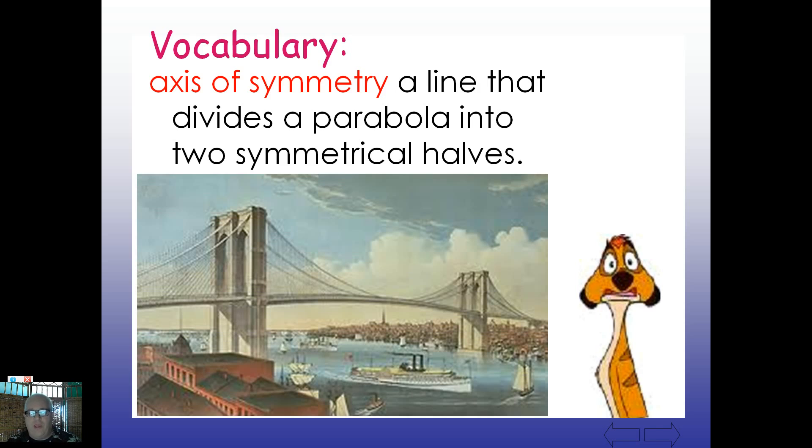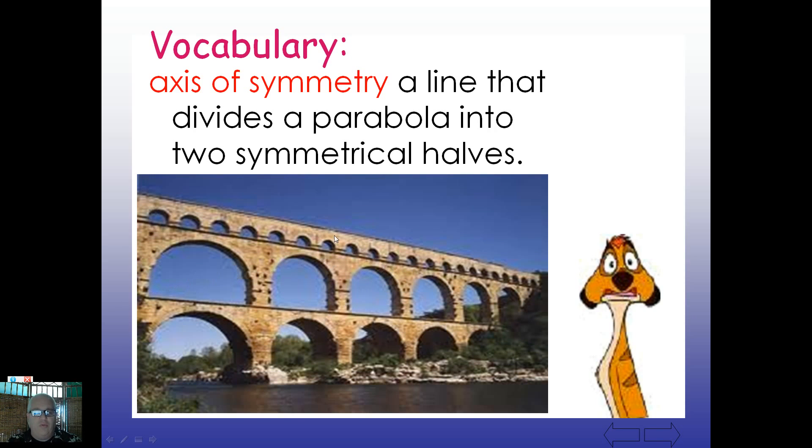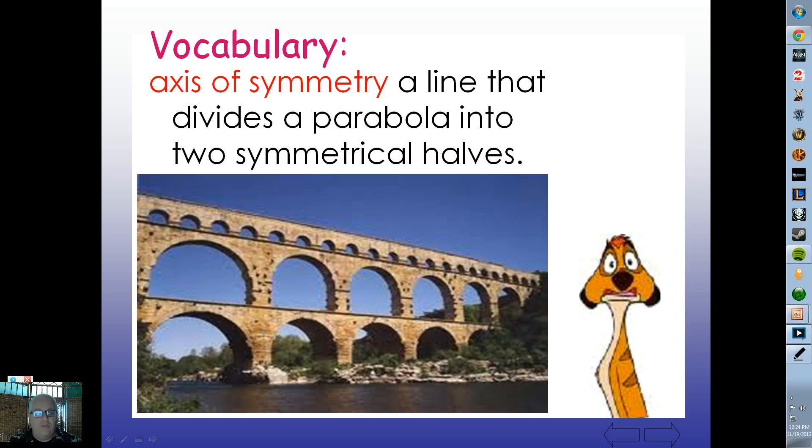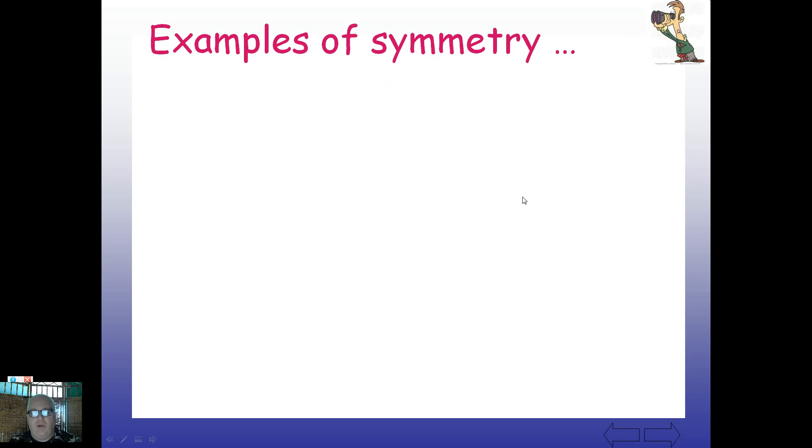Now, that's the zeros or x-intercepts. Let's talk about something called the axis of symmetry. If you think back to sixth or seventh grade, you guys did talk about symmetry. They may have given you a picture in art where you cut it down the middle and you paste it on one half of the paper, then you had to sketch the other half. An axis of symmetry is basically a line that divides a parabola or a picture in two symmetrical halves.